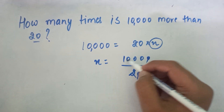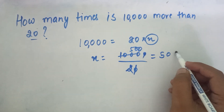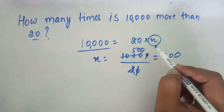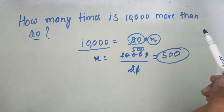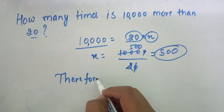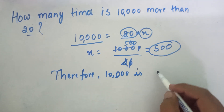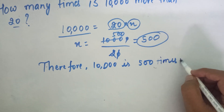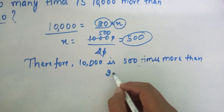Just divide it. So we'll get 500. So therefore, 10,000 is 500 times more than 20.